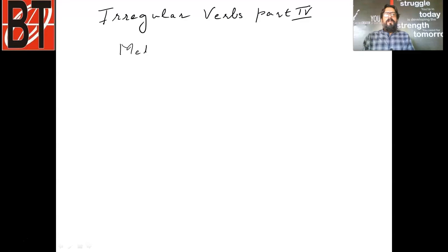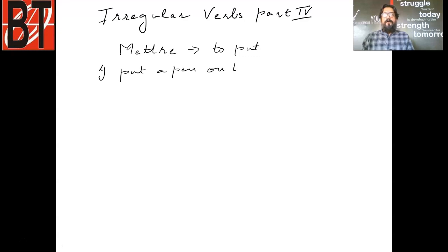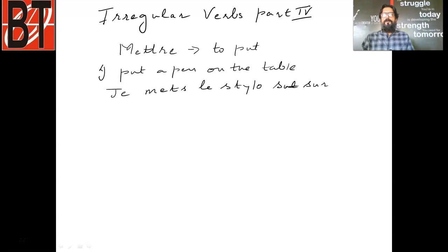Today we are doing the verbs in the family of this verb. It is a very important verb, 'mettre' — m, a, double t, r, e — mettre. Mettre means to put. Just say, 'I put a pen on the table.' I would write: je mets le stylo sur la table.